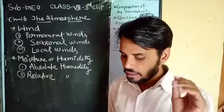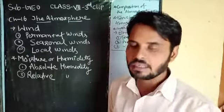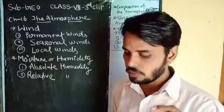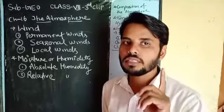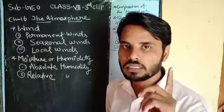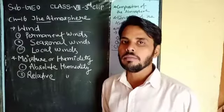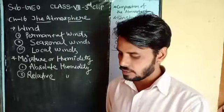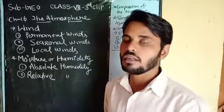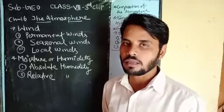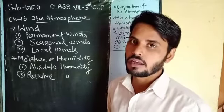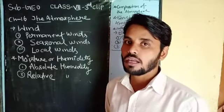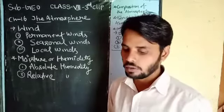Local winds क्या है? These winds blow over a particular period of the day or year in a small area. ऐसी हवाएं जो किसी particular दिन या साल के किसी particular महीने में बहती हों, उसे local winds कहा जाता है। Local winds का सबसे best example है इंडिया के northern part में गर्मी के समय में जो हवा चलती है जिसे हम 'loo' कहते हैं — वो local wind है। समुद्री इलाकों में land breeze और sea breeze जो होता है, coastal areas में, वो भी local winds है।